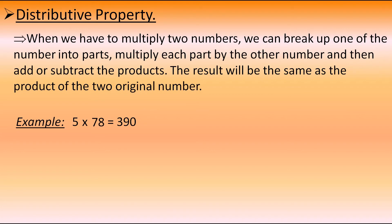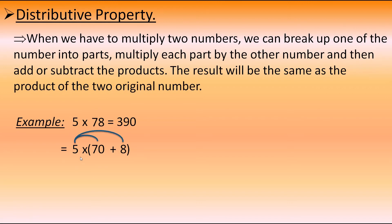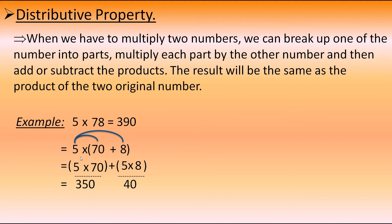Let's check with distributive property. Breaking 78 as 70 plus 8: 5 into (70 plus 8). We multiply 5 with 70 and 5 with 8 separately. 5 into 70 equals 350, and 5 into 8 equals 40. Adding the products: 350 plus 40 equals 390, which is equal to the original answer.